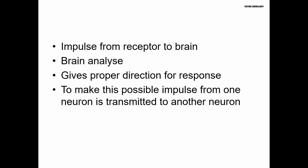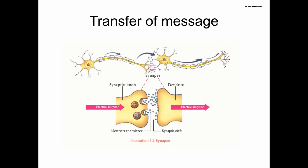Normally, an impulse travels from one neuron to another as a brain-to-body response. At the synapse, when we zoom in, there is an electric impulse traveling as an electrical message. When it crosses the synaptic gap, it becomes a chemical message carried by neurotransmitters. This allows the signal to continue from the dendrite onward.